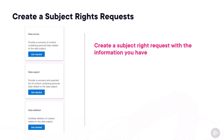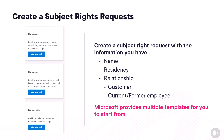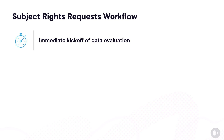Microsoft Priva enables you to create a subject rights request by simply providing information about the data subject, such as name, residency, email, and their relationship to your organization — for example, whether they are a customer or a current or former employee. Microsoft provides multiple built-in templates based on the most popular request types, such as data access, data export, or data deletion. After creation, Microsoft Priva immediately kicks off a data evaluation to collect all data that might relate to the data subject, and it helps prioritize content review by surfacing the most important content first — such as files containing confidential data or files with more than one person's data.